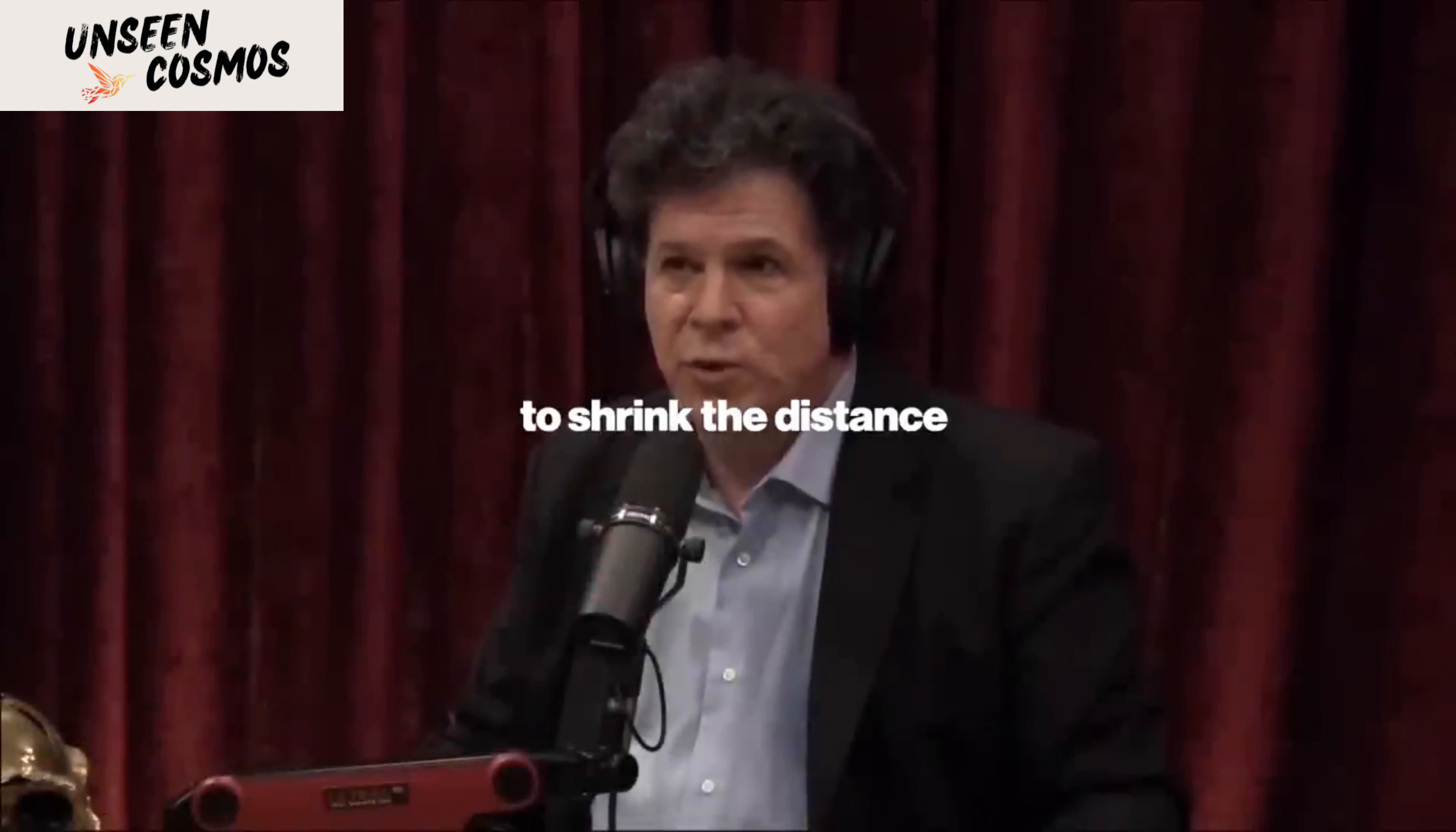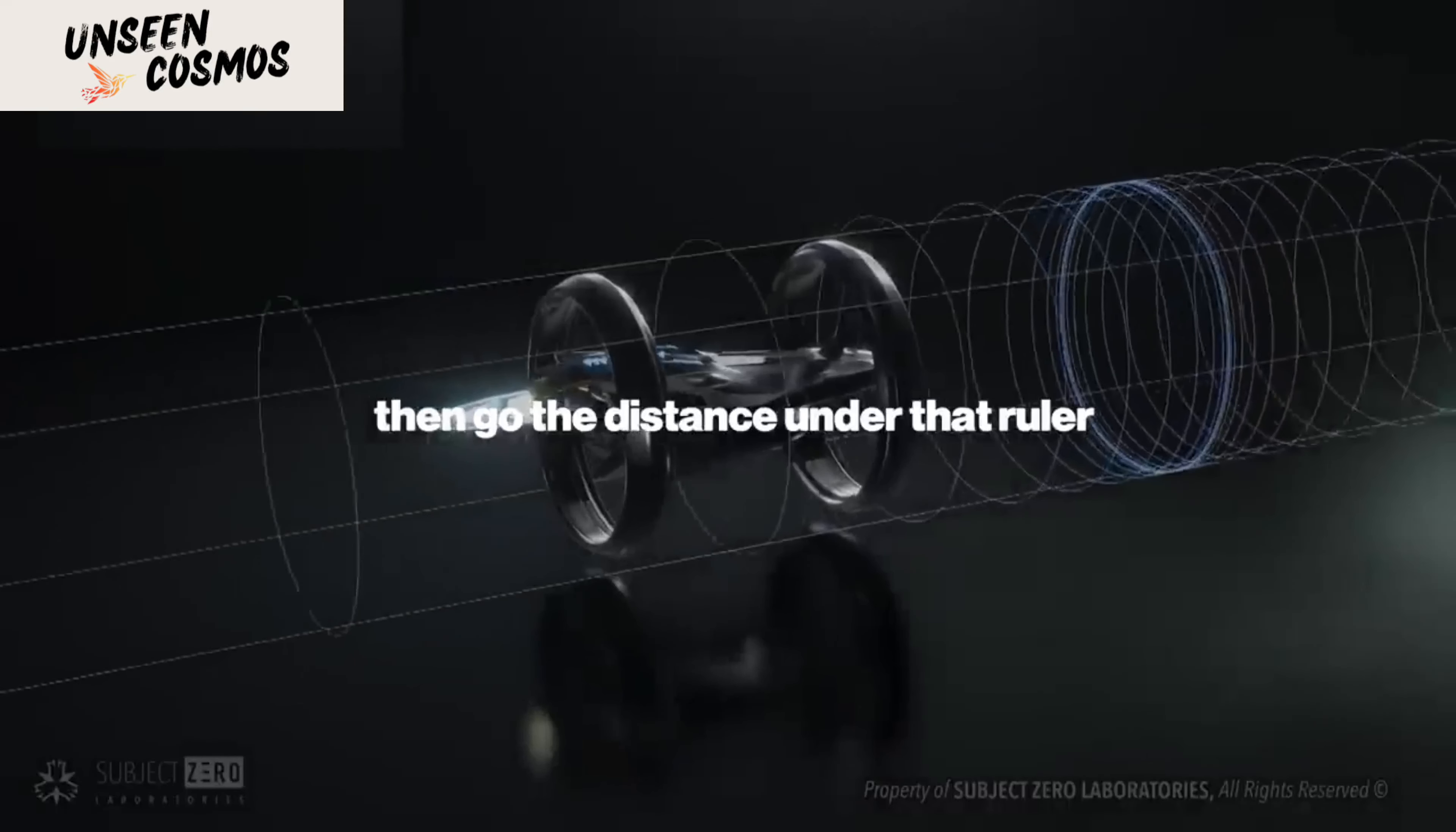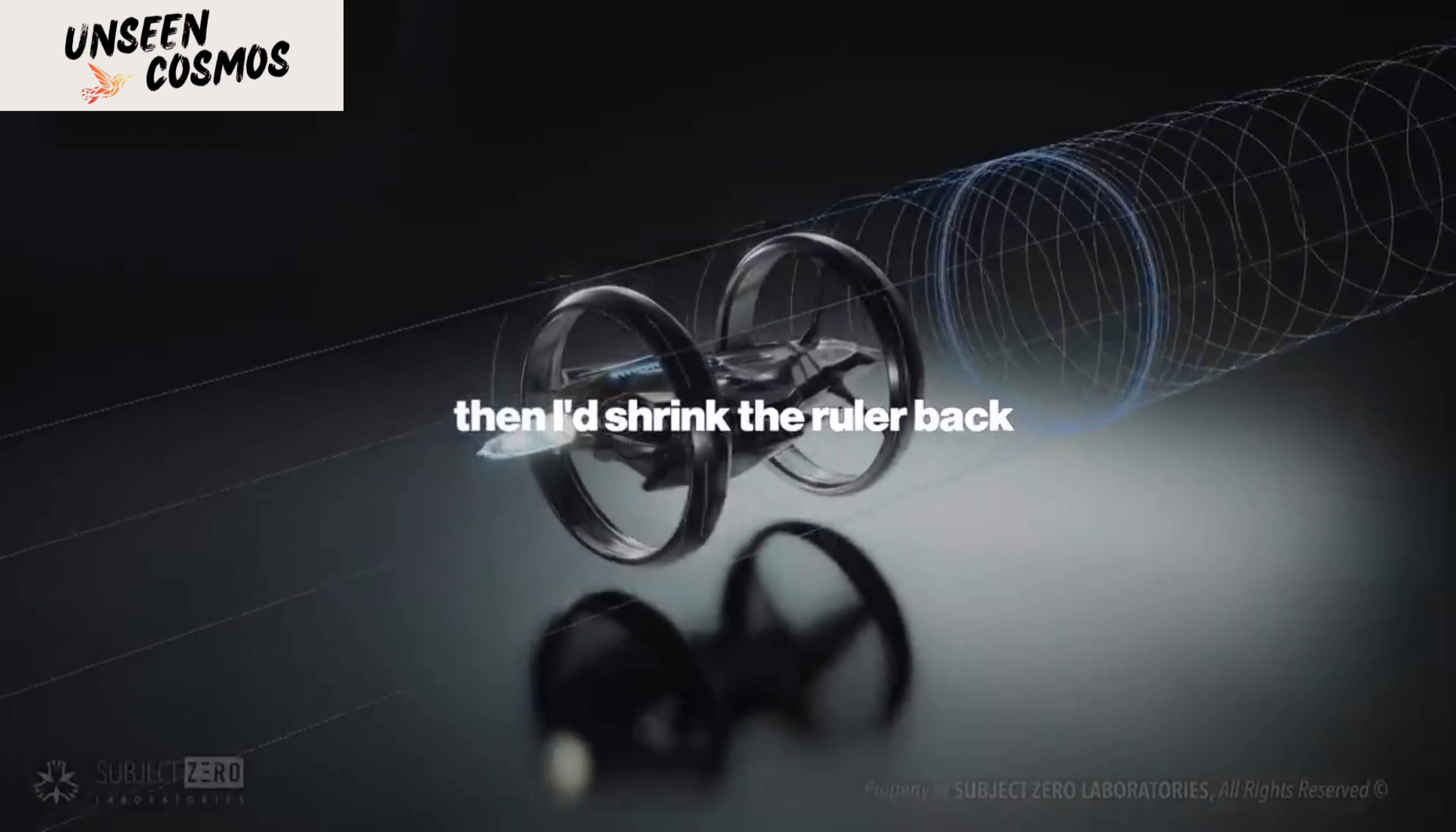The first thing I'd do is grow the ruler to shrink the distance, then go the distance under that ruler, and then I'd shrink the ruler back.